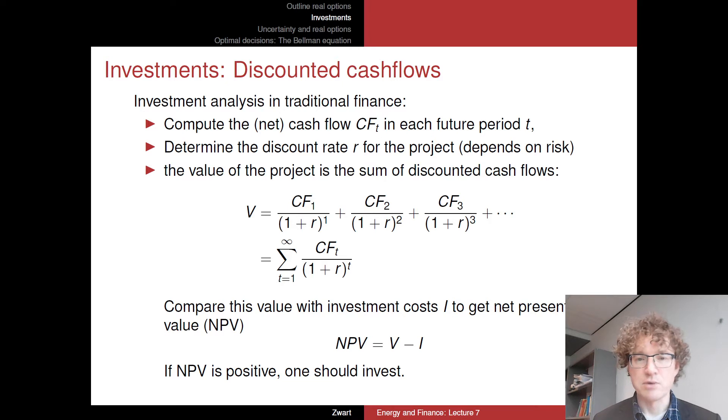So run from t equals 1 until perhaps infinity, if this is a very long-lived project, 10 years, whatever you wish. We have to think about what's the right discount rate for this project. So it might involve the WACC, the weighted average cost of capital. It might depend on risk, actually, and we'll call that R here.